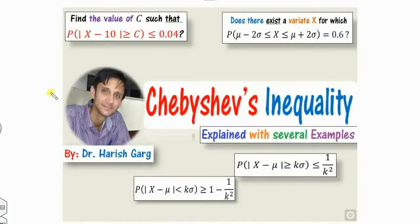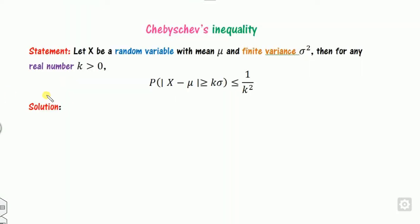In the last class we covered the formulas for the Chebyshev inequality and how to solve related problems. More than 7 to 8 examples were discussed in that video. You can search 'Chebyshev inequality' on YouTube to find those related videos. In this short 5 to 6 minute video we will see how to prove the Chebyshev inequality.